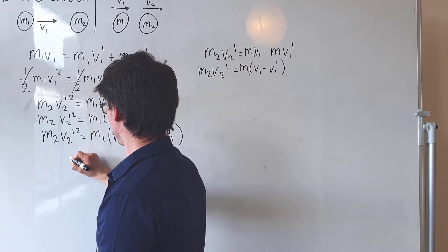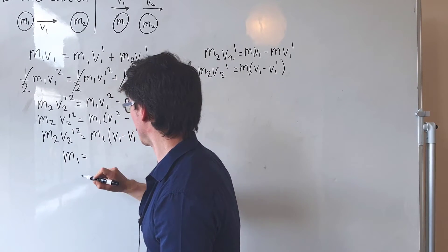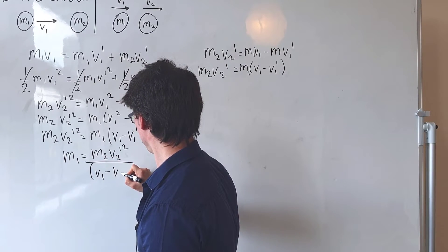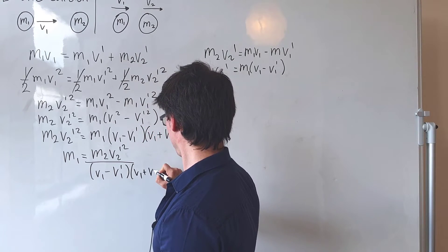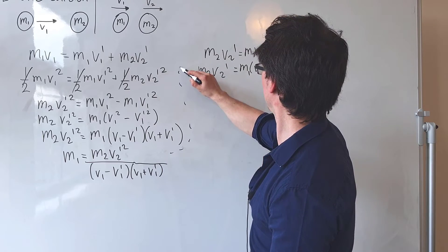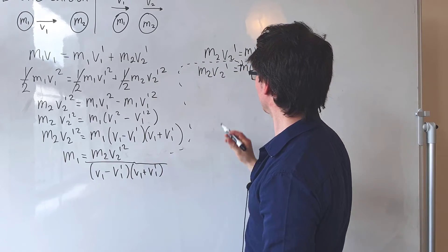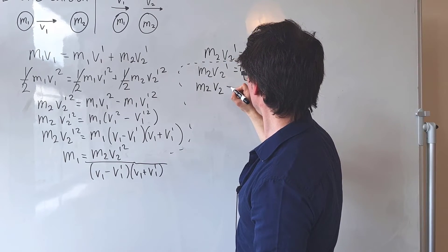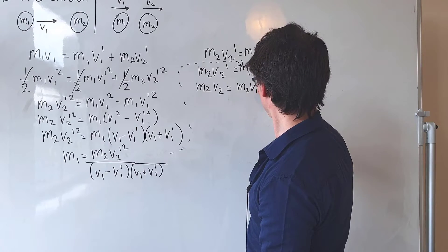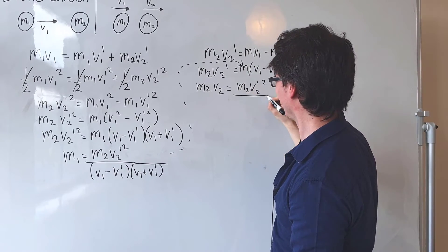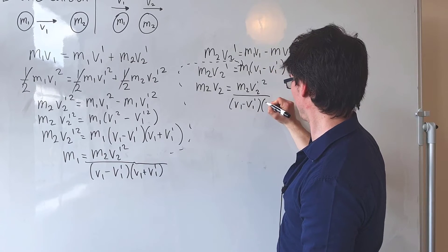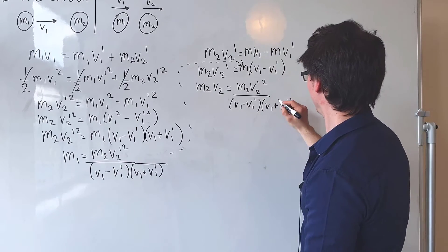Now let's rearrange to isolate m1: m1 equals m2 v2 prime squared divided by (v1 minus v1 prime)(v1 plus v1 prime). Let's substitute that back into the momentum expression. What we get is: m2 v2 prime equals m2 v2 prime squared divided by (v1 minus v1 prime), multiplied by (v1 plus v1 prime).